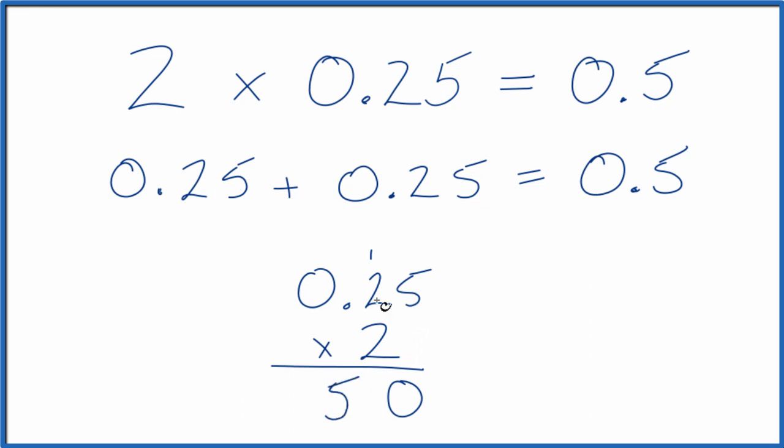And we have two decimal places, so 1, 2. We end up with 2 times 0.25. That equals 0.50, or just 0.5.